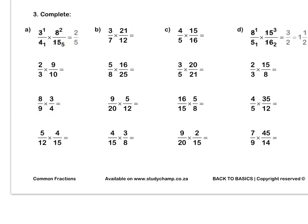Let's do B together. We can simplify — divide both by 7 to get 1 and 3. Then we can simplify that top and bottom by dividing both by 3, giving 1 and 4. We multiply out to get 3 over 4. Press pause to complete questions A, B and C by yourself.